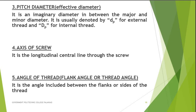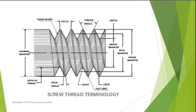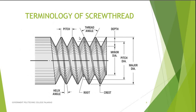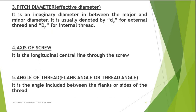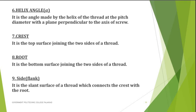Next is the angle of thread, also known as flank angle or thread angle. The flank or side of the thread is the inclined surface. Thread angle is the angle included between the flanks or sides of the thread.